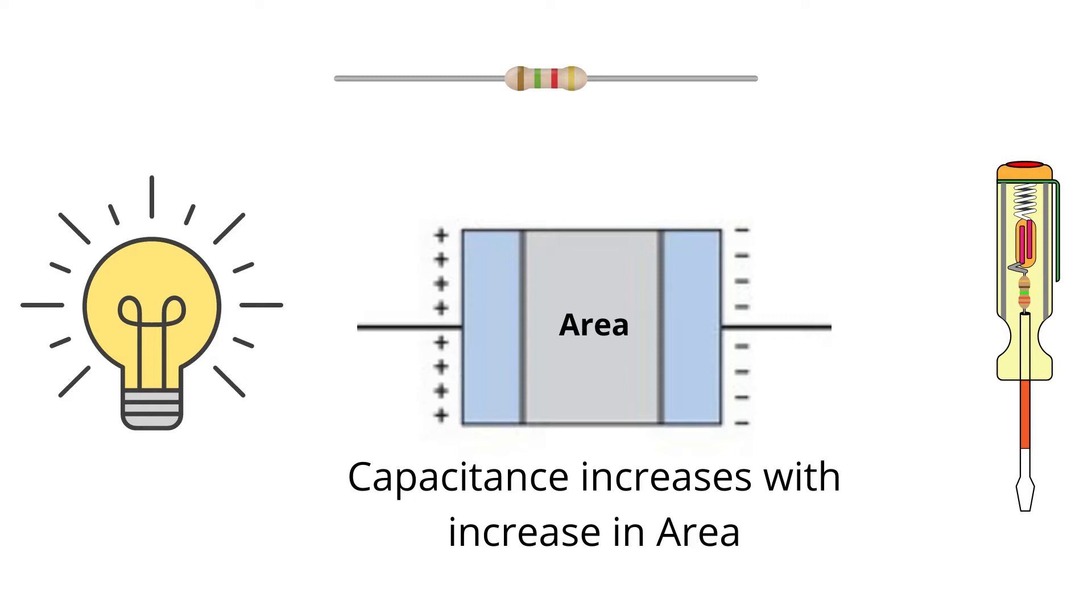Secondly, if the distance between the plates reduces, the electric field developed between them increases, which increases the charge that can be stored across them, which in turn increases the capacitance of the capacitor. The third factor affecting capacitance is the permittivity of the dielectric material.